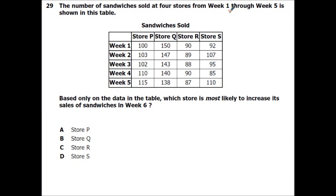The number of sandwiches sold at 4 stores from week 1 through week 5 is shown in the table. Based only on the data in the table, which store is most likely to increase its sales of sandwiches in week 6? So this is just a pattern sequence. So we went up, we went one down, up, up. This one's going down every time. This one's slowly going down. We had one little one right here, but it went there. This one you have no idea. So store P is the only one where you're consistently going up each time.